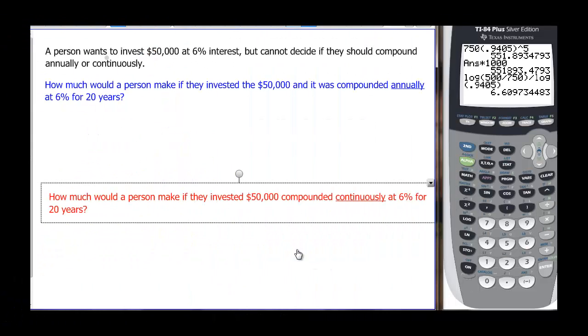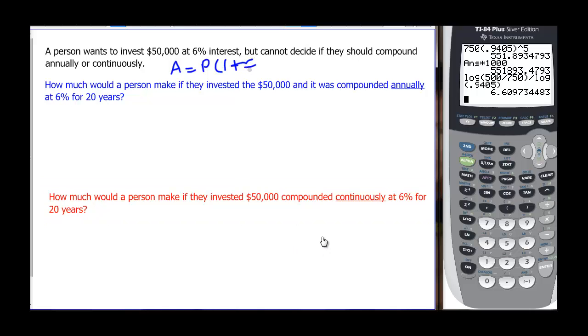We also have interest problems that we can do that work wonderfully with trying to solve these equations. A person wants to invest $50,000 at 6% interest, but cannot decide if they should compound annually or continuously. So let's look at both. Remember that the equations are A equals P times (1 plus R over N) to the NT. But if N is 1, then it's 1 plus R. And A equals P times e to the RT for continuous.